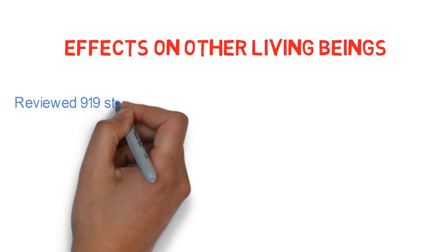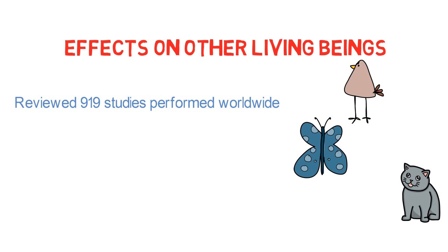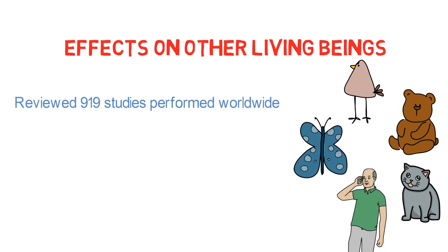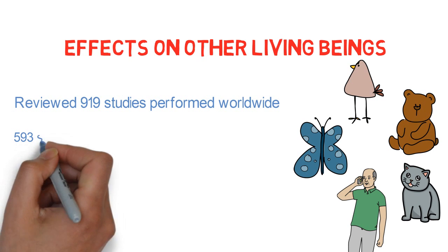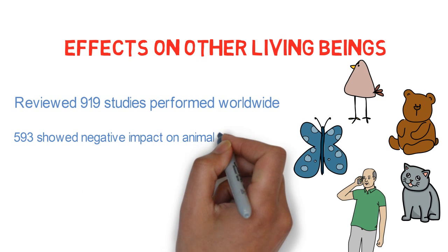In 2010, a group of experts reviewed 919 studies performed worldwide regarding the effects of cell phone towers on birds, insects, animals, wildlife and humans. Out of the 919 studies, 593 showed that mobile tower radiation had negative impact on animal life.